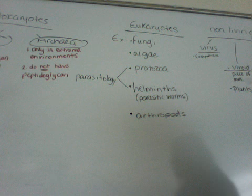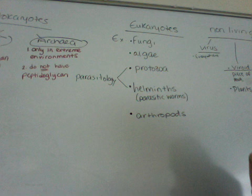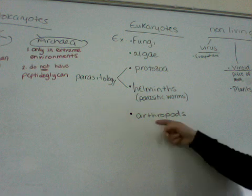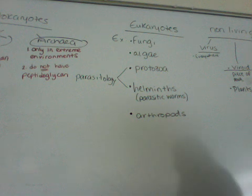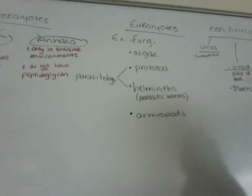Protozoa are microscopic, generally found around water — we'll spend more detail with them later on. Helminths are the parasitic worms. Those two together create the field of parasitology, which is a subunit of microbiology. The last eukaryotes are the arthropods — blood-sucking insects like ticks, lice, and mites — all of those things that bite you.